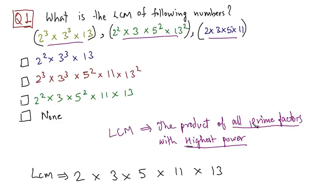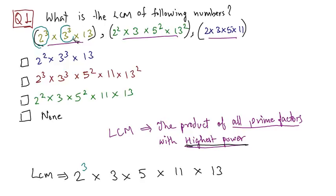LCM is the product of all prime factors with highest power. We haven't given the powers yet, so let's give these prime factors their powers. The highest power of 2 is 3, so we have 2 raised to 3. The highest power of 3 amongst all the 3's here is again 3, so we have 3 raised to 3. Next comes 5 — the highest power of 5 is 5 raised to 2.